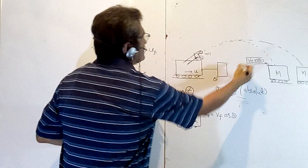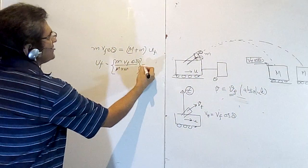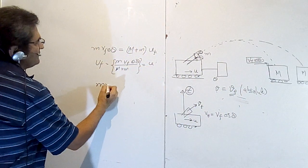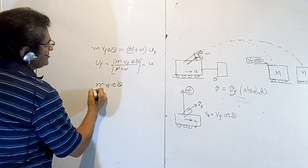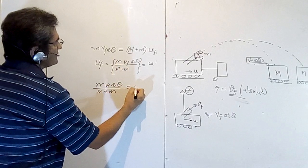So your U final should match with u. M Vf cos theta upon (M plus m) will be equal to u.